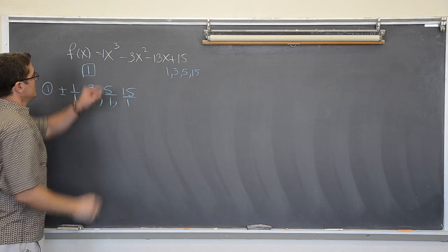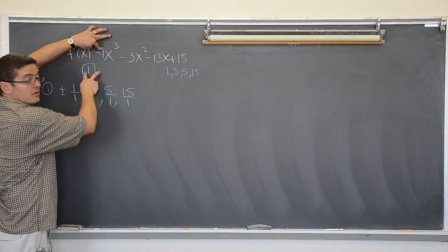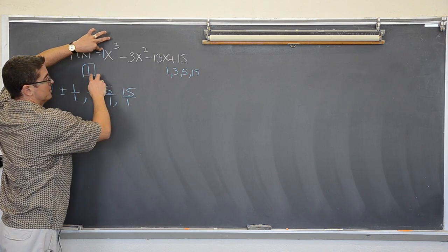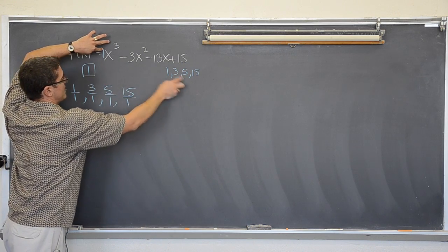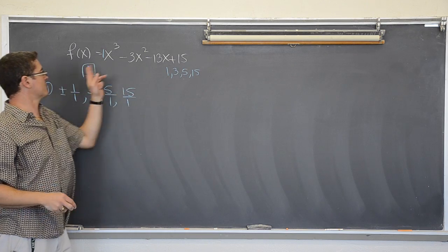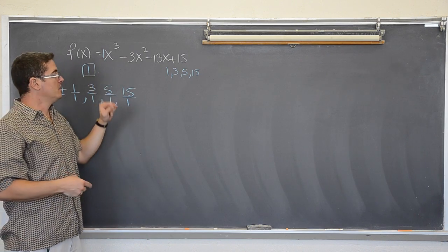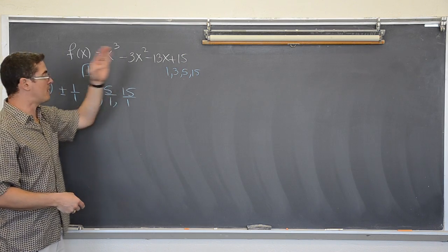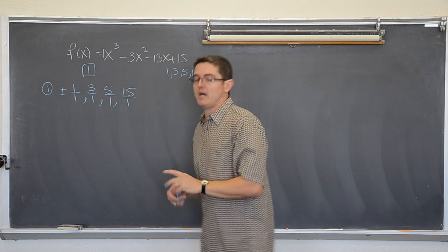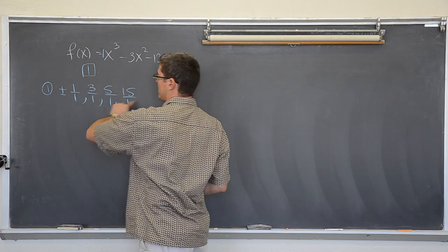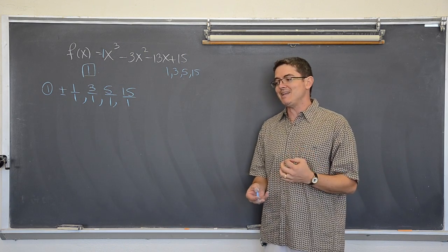Now, if the leading coefficient were 2, with factors 1 and 2, then you would pair each factor of 15 over each factor of 2: 1/1 and 1/2, 3/1 and 3/2, 5/1 and 5/2, and 15/1 and 15/2. You need all the factors of the constant paired over all factors of your leading coefficient. Mine is 1, so I have a relatively short list — but even so, I still have a possibility of guessing and checking 8 times.